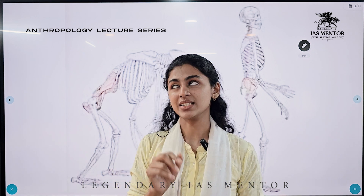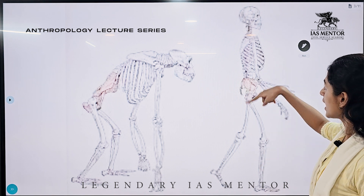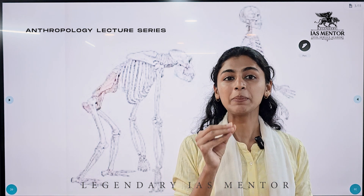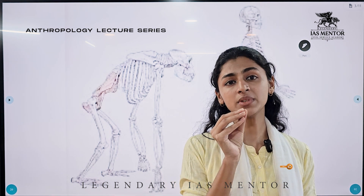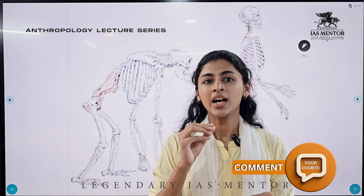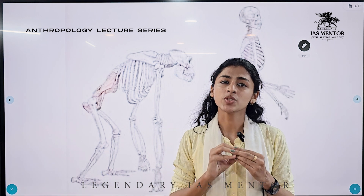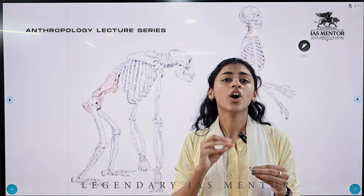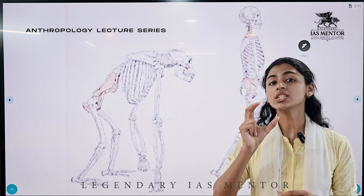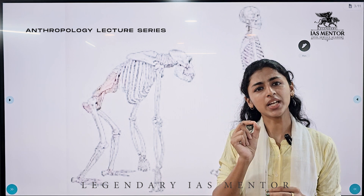Standing upright is a result of bipedalism — walking on two legs. The first evidence of bipedalism was studied by Mary Leakey from fossil remains from Tanzania, belonging to Australopithecus afarensis. The ability to walk on two legs developed even before brain development, as observed by Raymond Dart in his study of Australopithecus africanus, where the foramen magnum was placed forward while the brain was similar to that of a modern ape.